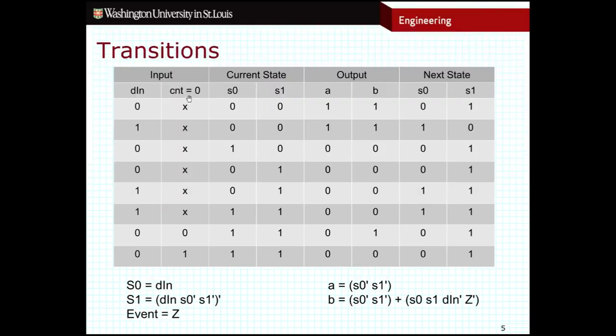So we see here's our next states, so S0 and S1. Those are pretty straightforward. We've seen things like that before. The event output that's not listed on this table is going to be equal to Z. Z is what I'm calling this count equals zero part of the table.